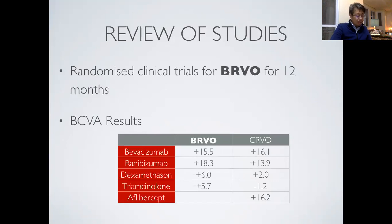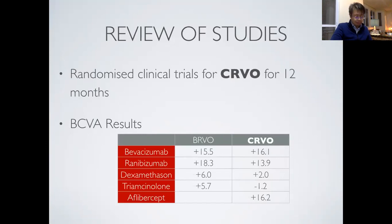In the randomized clinical trials, mean changes in best-corrected visual acuity in letters at month 12 in patients with BRVO are seen in the middle column. The mean changes in BCVA in letters at month 12 in patients with CRVO are seen in the last column.